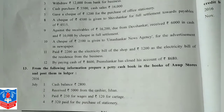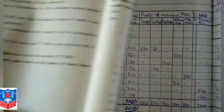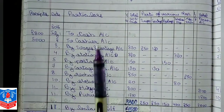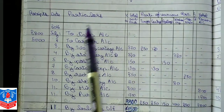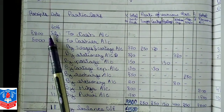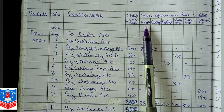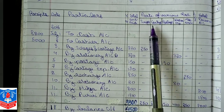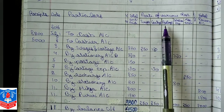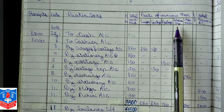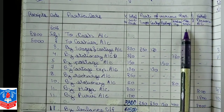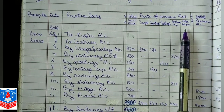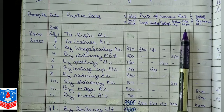I have kept it ready. This is the petty cash book of Anup Stores. Here there are many expenses: wages, cartridges, postage, stationery, and miscellaneous. There are a total of five types of expenses, various expenses.